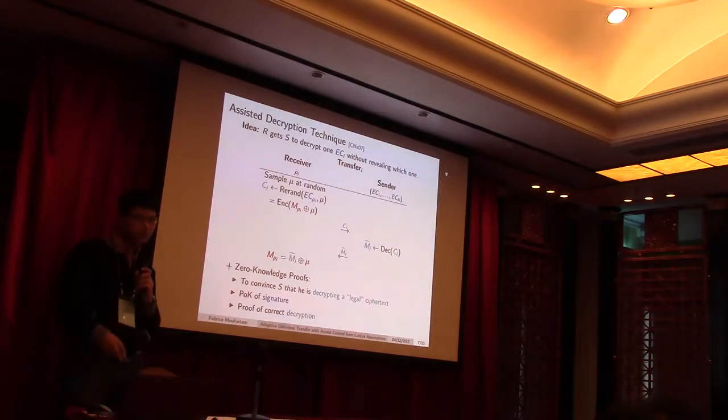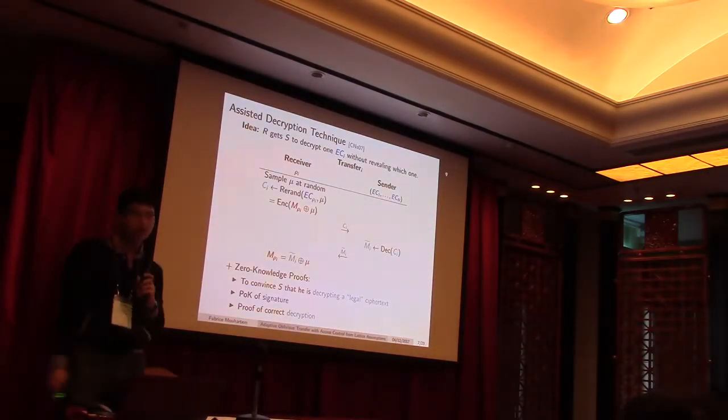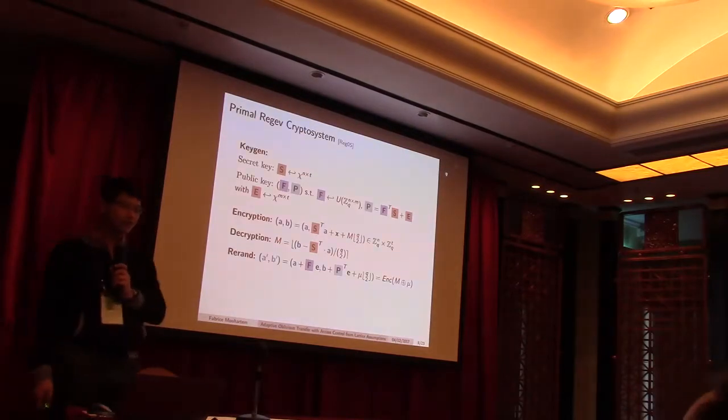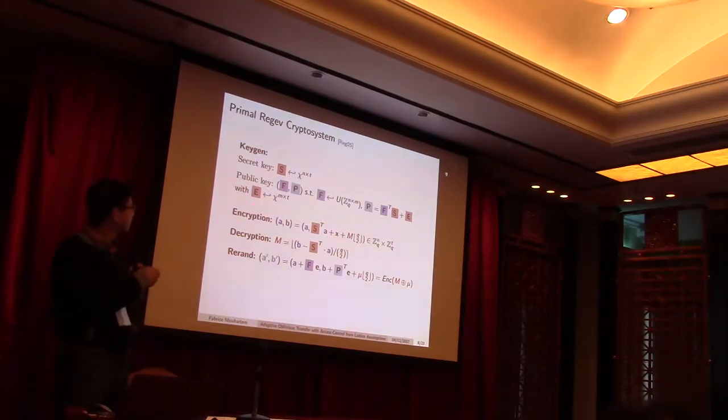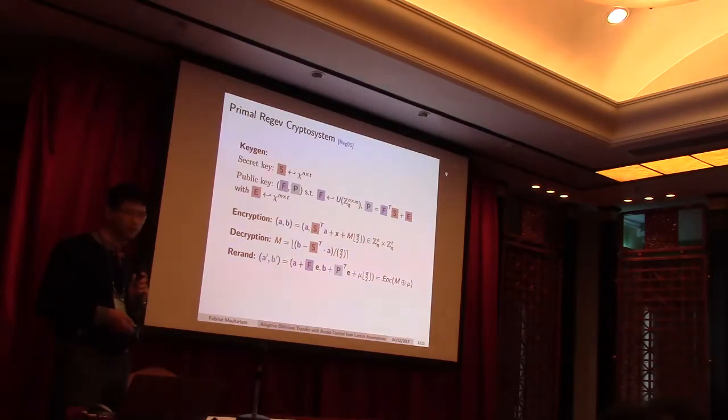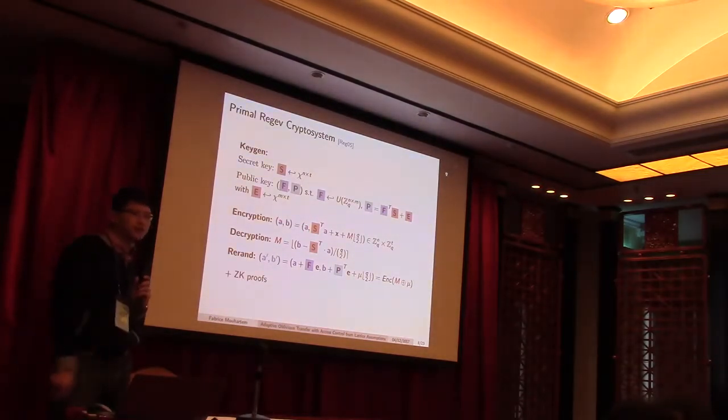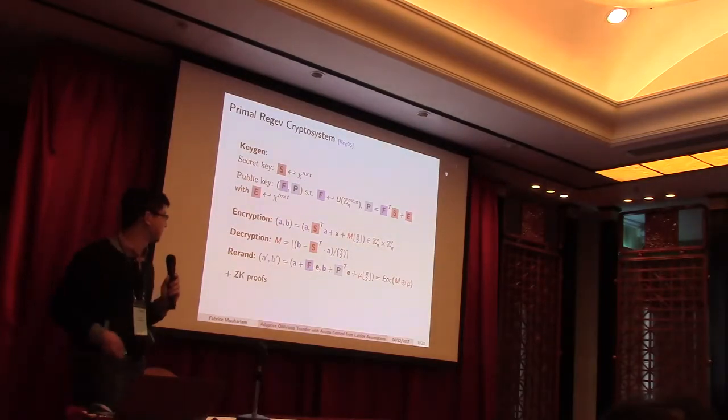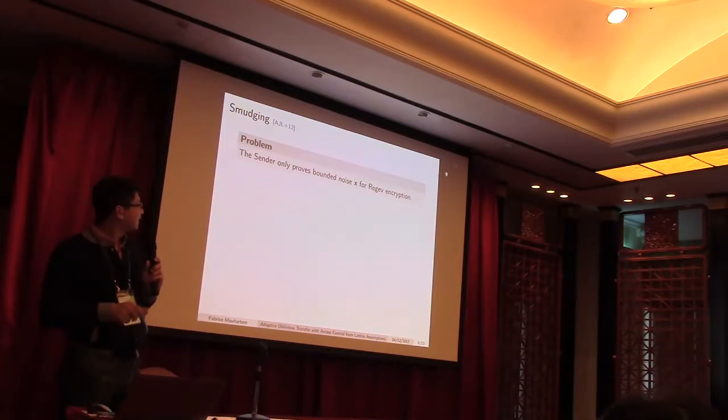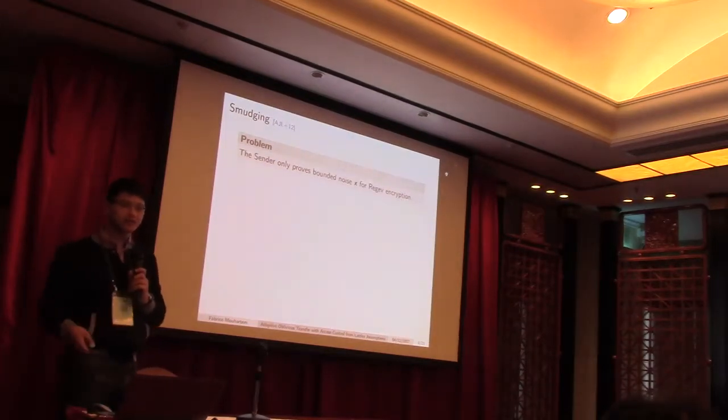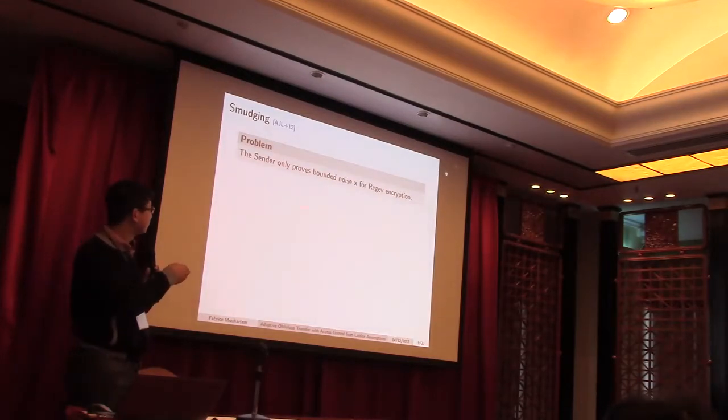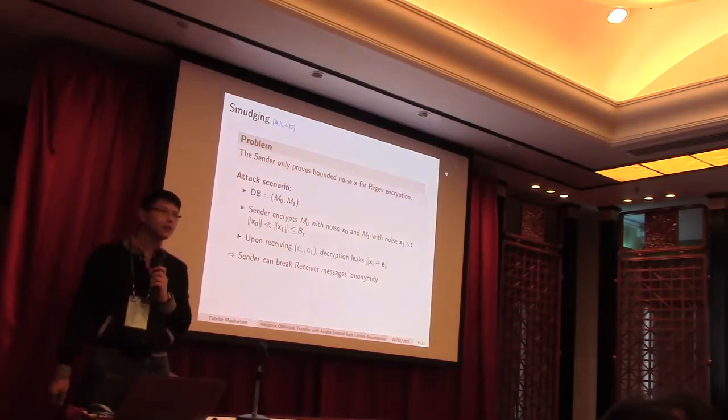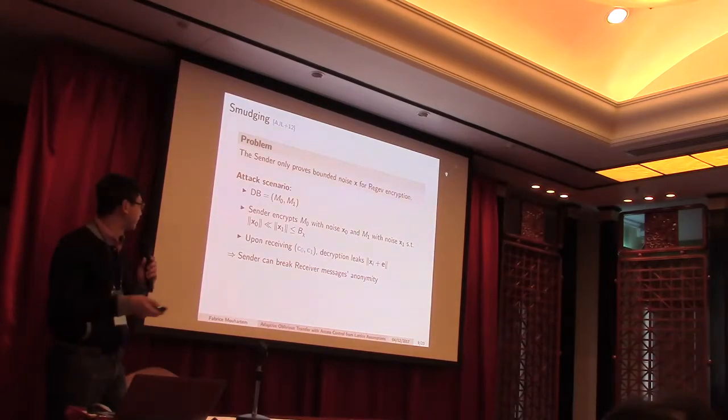This is given by proof of knowledge of a signature of one of the messages. And also, the sender has to prove to the receiver that it indeed made a correct decryption. So, to do this, we need PKE, which is compatible with zero-knowledge proofs. So, to do that, we will use the primal Regev encryption system, as described here. Here there is nothing new except that we will use a security version just to make our proof a little bit simpler.